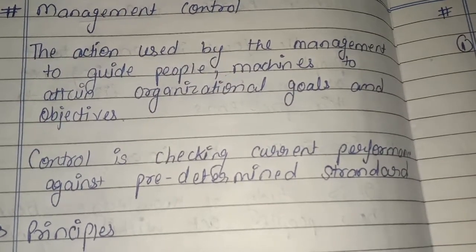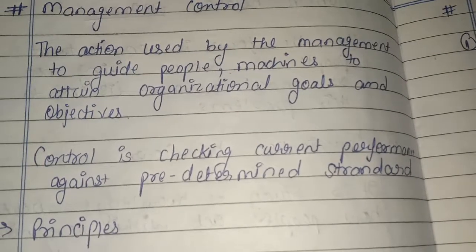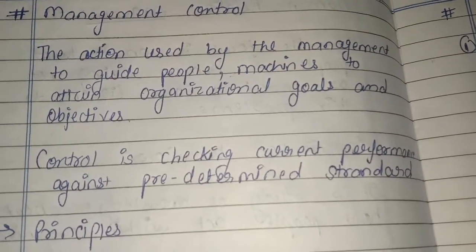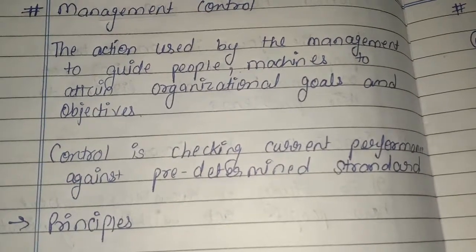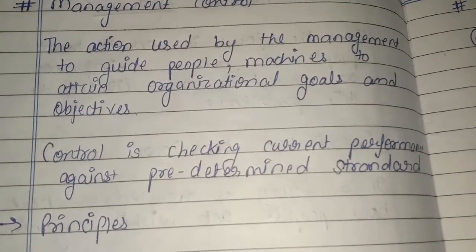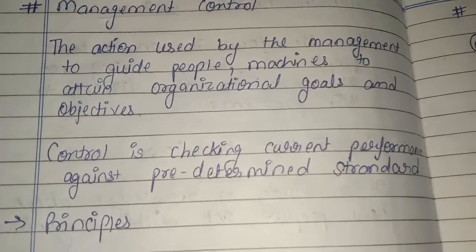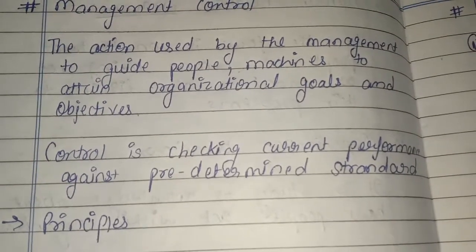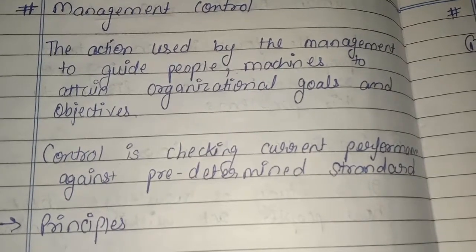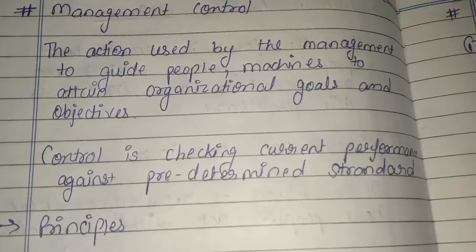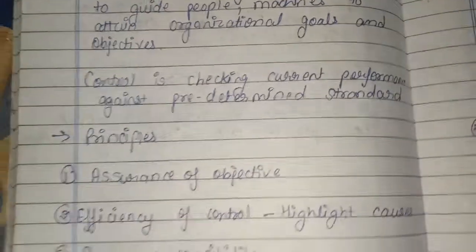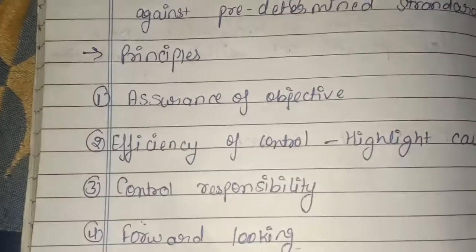Control is checking current performance against predetermined standards. Control का काम यह है कि जो हमारी predetermined standards होती हैं — मतलब कि जो हमने पहले से determine किया है कि यह काम इस तरह से होगा — उस current performance को हम check करते हैं ताकि हम determine कर सकें कि कहां पर हमें control की ज़रूरत है और कहां पर और ज्यादा मेहनत करनी है।